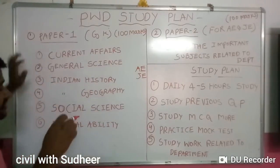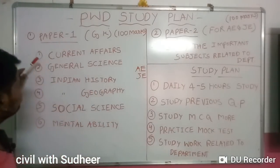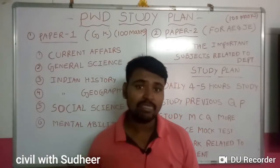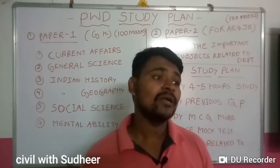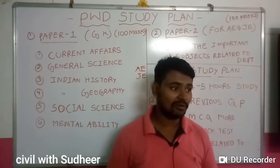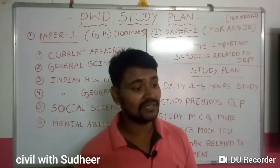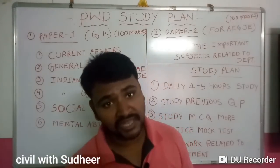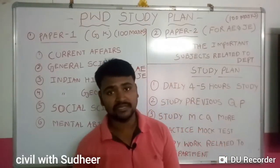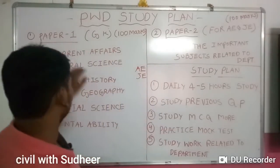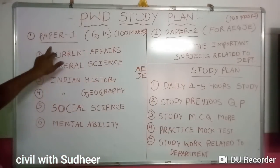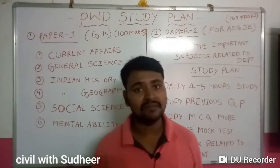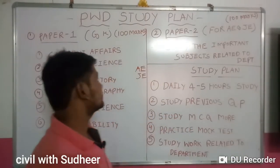First of all, current affairs. The current affairs area covers national and international events. Current affairs is a great and important topic. There are also development-related questions — central government schemes and policies. There are international questions as well. Current affairs carries a maximum of 10 questions, around 10 to 15 marks.